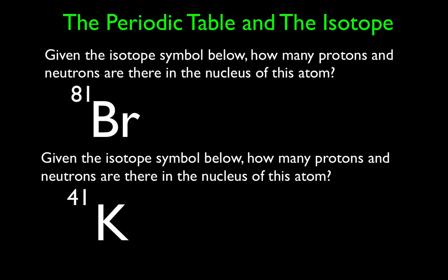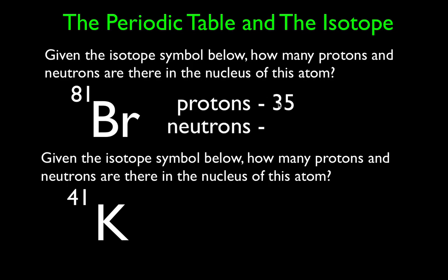Given the isotope symbol bromine-81, now we're doing the opposite. The number 81 in the upper left-hand corner is the mass number — protons and neutrons together. We must find bromine on the periodic table, and you'll notice that it is element 35. So if it's element 35, it must have 35 protons in its nucleus. How many neutrons are there? Well, 81 is the mass number — protons and neutrons added together. If we subtract out the 35 protons, we get 46 neutrons. Let's check: 35 plus 46 is 81. The protons and the neutrons added together equal the mass number.